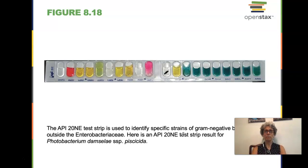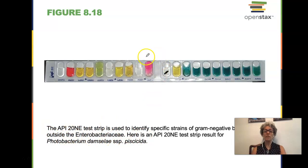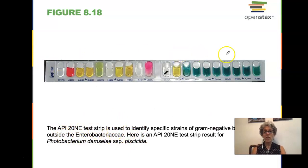We are doing this a different way in lab. We have more than 15 separate tests to run to be able to identify organisms. These test strips only identify strains of gram-negative bacteria outside the Enterobacteriaceae, so only a very limited number of gram-negative microbes. Our list of unknowns contains both gram-negatives and gram-positives, some of them members of the Enterobacteriaceae family. So this test strip wouldn't be very useful. In clinical settings, you can do all of these tests in 24 hours and get all of the test results back.